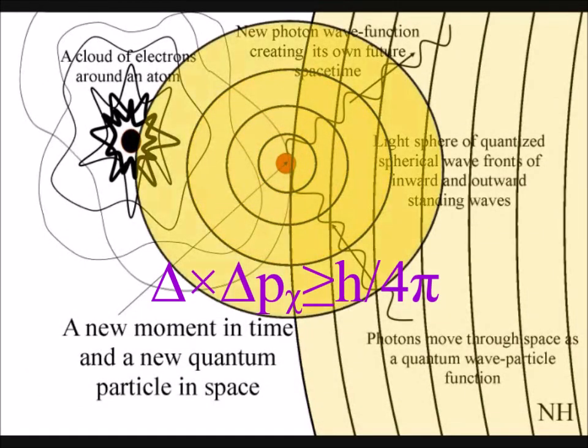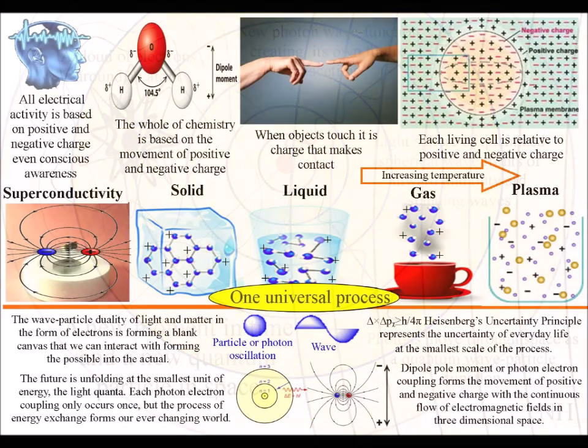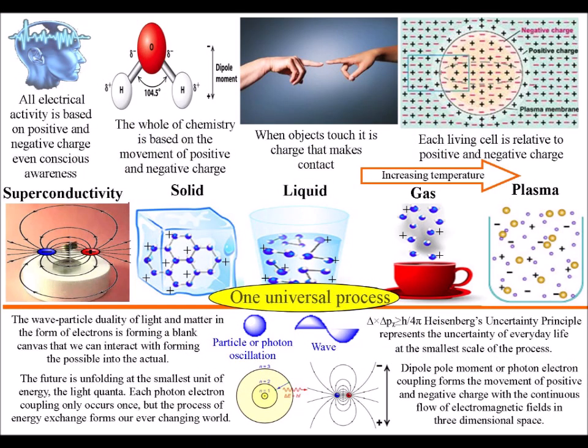The spherical surface forms a dynamic two-dimensional manifold for the movement of positive and negative charge. This two-dimensional manifold also forms the so-called fourth dimension of time that we have in special relativity.